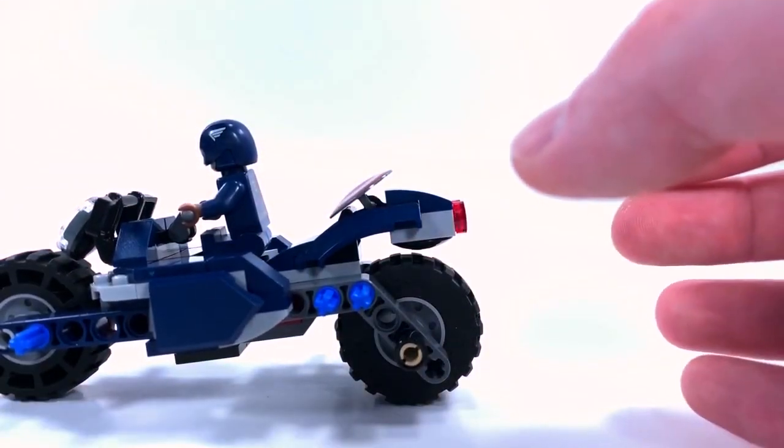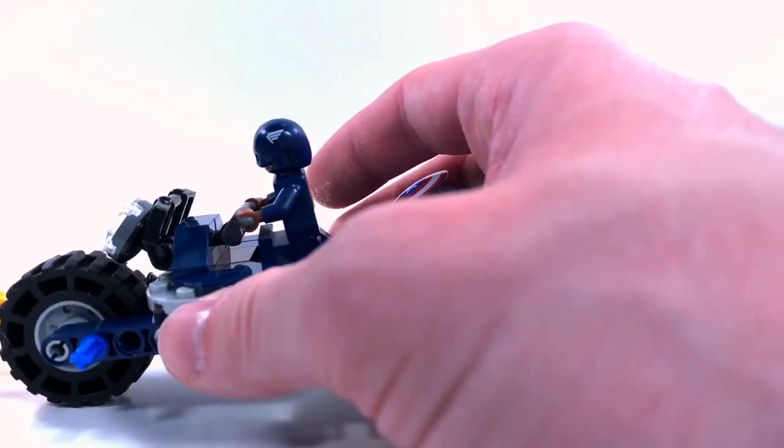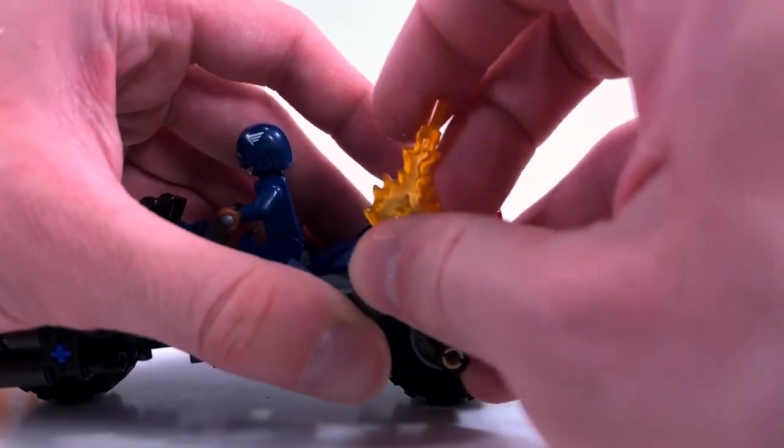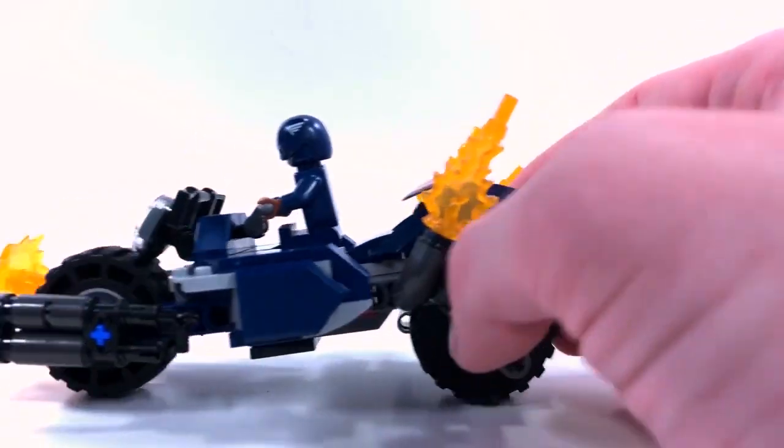And before I forget, we should probably put on the finishing details, like the flamethrowers, which just plug into the Technic pins. And the exhaust pipes, which I still feel like are a bit unnecessary, but they do look pretty cool. So you know, I'm not going to mess with them. And with that, your modified Cap's bike is done.